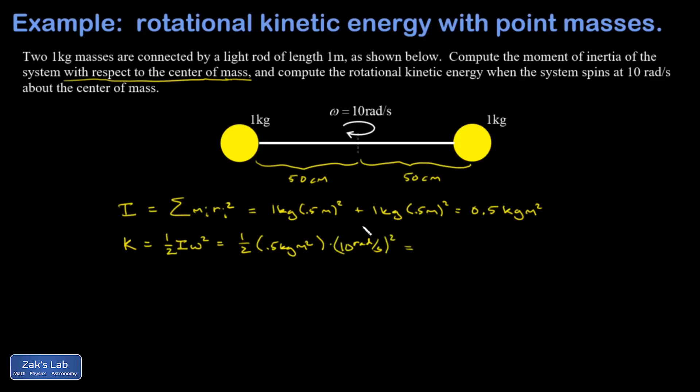So remembering that radians are actually unitless, I can just disappear that. And the number I get out of this is 2.5 kilogram meters squared per second squared.